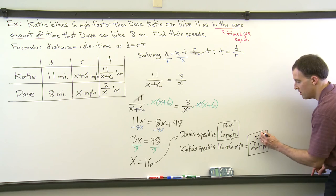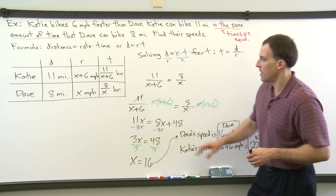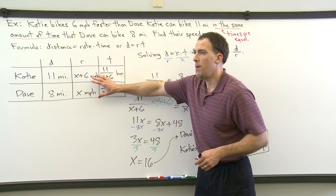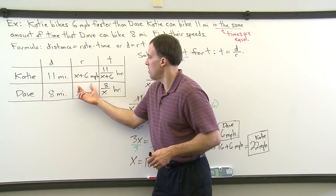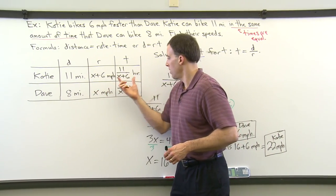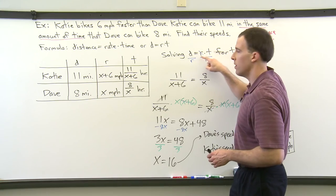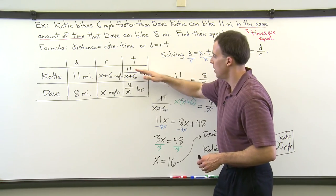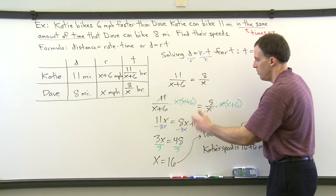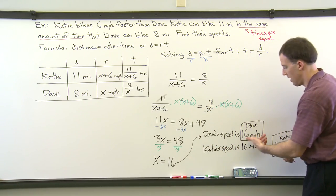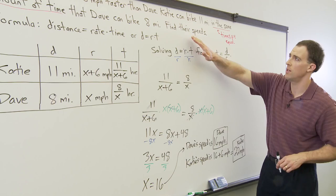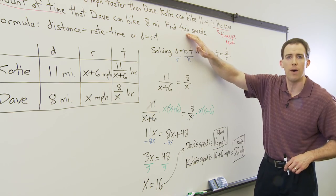So with a distance equals rate times time application, I would suggest that you make a table or a chart here. And then use two of your columns that you have completely filled in to fill in the third column, utilizing the formula. Solve for whichever variable you need. Set up your equation. Do whatever you need to do to both sides. Solve for your variable and then answer the question. Make sure you answer the question that is in the original problem.